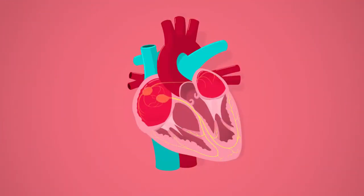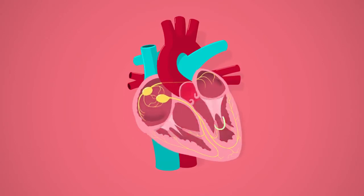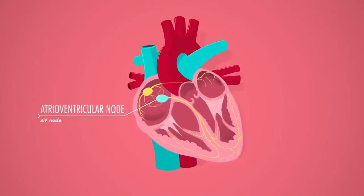The atria contract and blood drops down into the ventricles, and then a moment later the signal moves on and triggers the ventricles to squeeze, making the blood flow out of the heart.